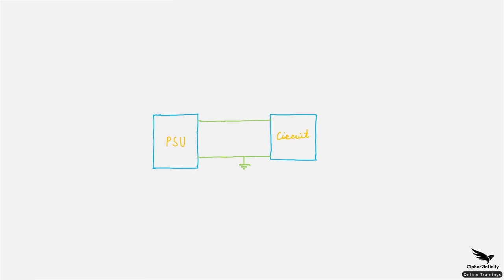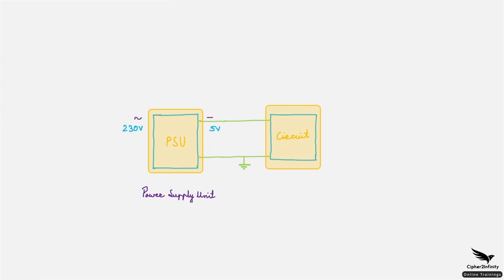To understand how capacitors work as a filter, let's consider this circuit and try to understand it step by step. In this circuit there is a PSU — a power supply unit — which is basically an AC to DC converter. It takes 230V AC and generates 5V DC on the output side, which is then provided to this particular circuitry. But let's consider that the output of this power supply unit is not pure 5V DC — it includes some noise. And we don't want that noise to travel towards this circuit, because we want to power it with pure 5V DC.